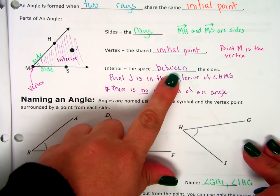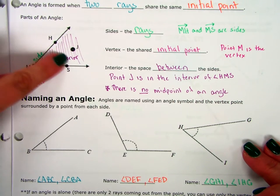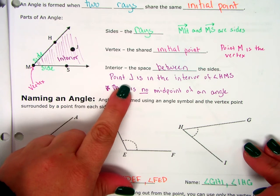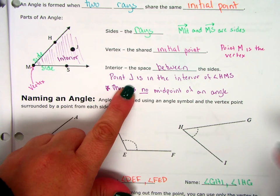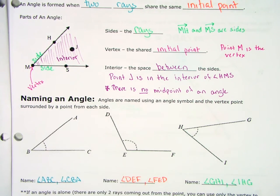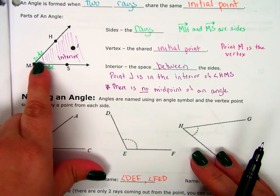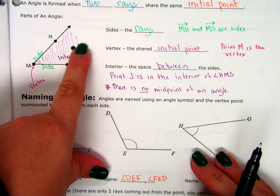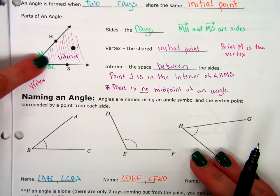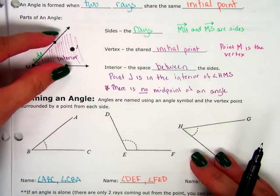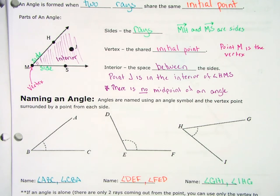The interior is the space between the sides. So all of this is the interior. So point J is in the interior of angle HMS. Now there's no such thing as a midpoint of an angle because there's not one point that's exactly in the middle. We'll talk about a ray that cuts the whole thing in half, but there's not a single point that does that.